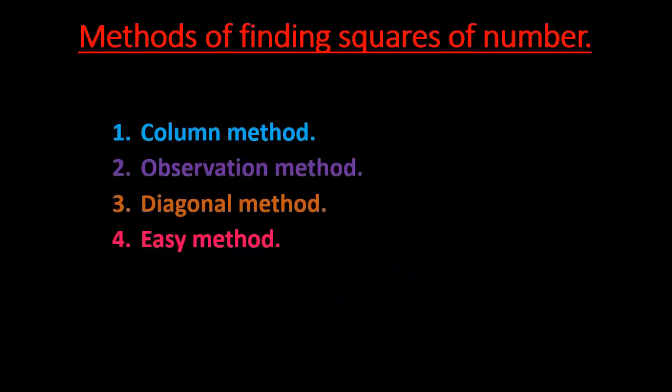In the previous class we solved question number one of exercise 3.3, which was related to the column method. Now we move on to question number two, which is related to the observation method — the second method of finding the square of a number.